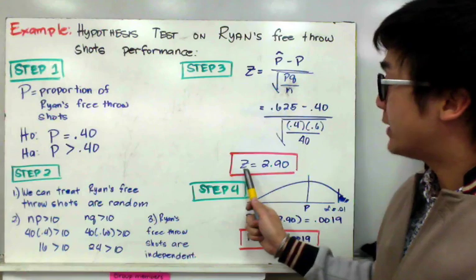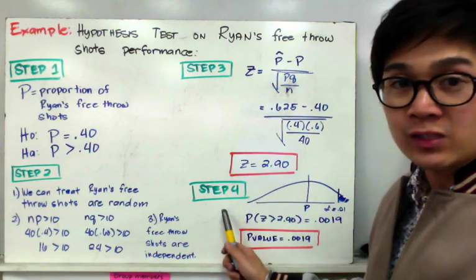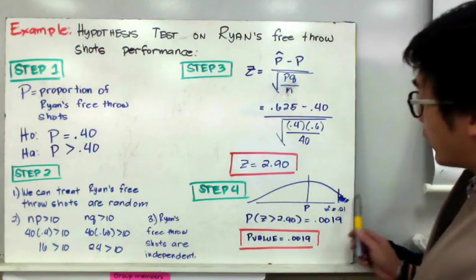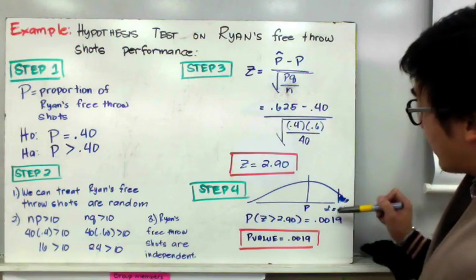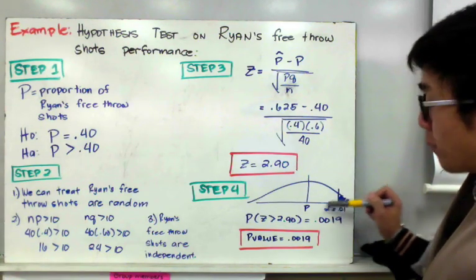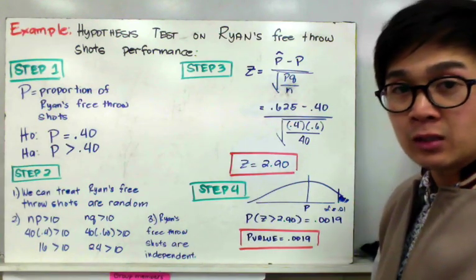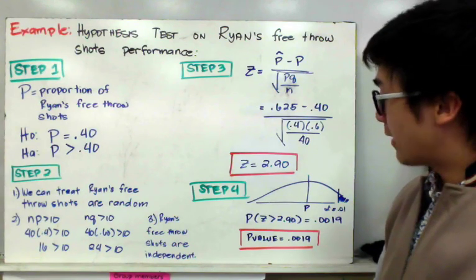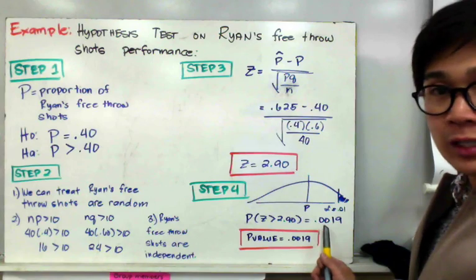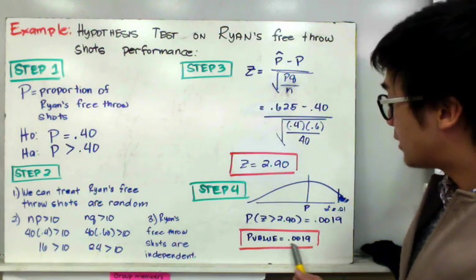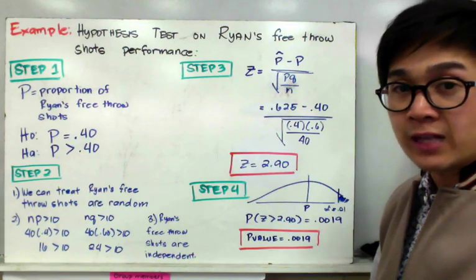Now that we have z equal to 2.90, we move to step four: finding the p-value. On the normal curve, with z of 2.90 and alpha of 0.01 to compare against, using a calculator's normal CDF or a z-table, the probability of z greater than 2.90 gives us 0.0019. This p-value of 0.0019 will determine whether we reject or fail to reject the null hypothesis.